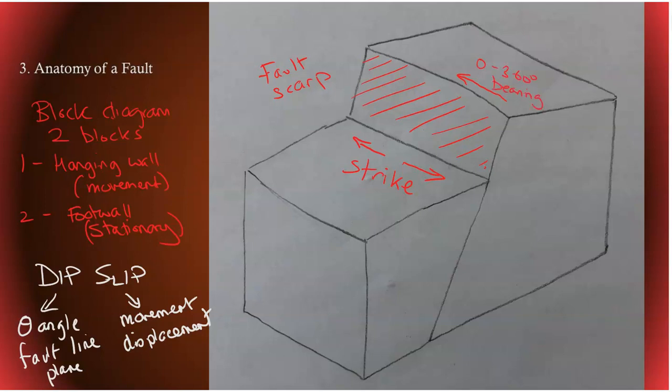And this is looking at the azimuth, which is relating to magnetic north. And then we can also look at the throw and the heave. The throw would be how far the hanging wall has gone down. So this is the throw or the distance. And the heave would be how far the hanging wall along the fault line, fault plane, has moved forward. So throw and the heave.